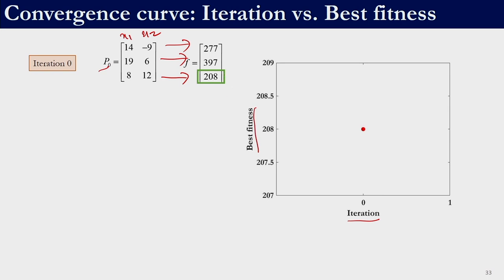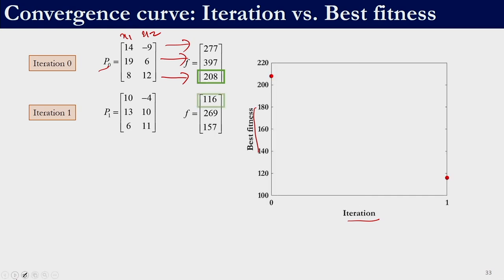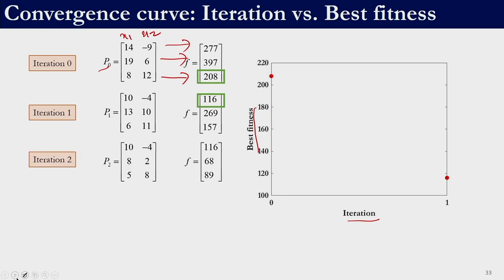Among these three solutions, if we see, 208 is the best solution. So, I am going to plot that particular value alone — not 277 or 397 — only the best value in the fitness function is plotted. Then subsequent to those we perform the teacher phase and the learner phase, and at the end of iteration 1, let us say this is our population and these are their corresponding fitness function values. At the end of iteration 1 the least value is 116, so at the end of iteration 1 I had 116. We plot that 116 and we continue doing so.